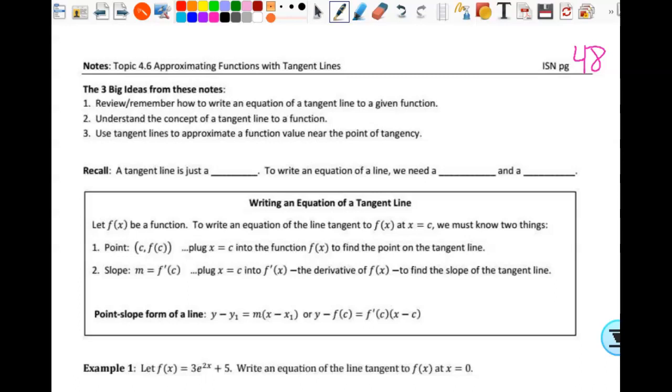So three big ideas for what we're doing today. If you remember how to write an equation of a tangent line, which we can do. Understand the concept of a tangent line to a function, which I think we got down for the most part too. Then this is the new part: use the tangent line to approximate a function value near the point of tangency. I'll talk about how that works when we get there.